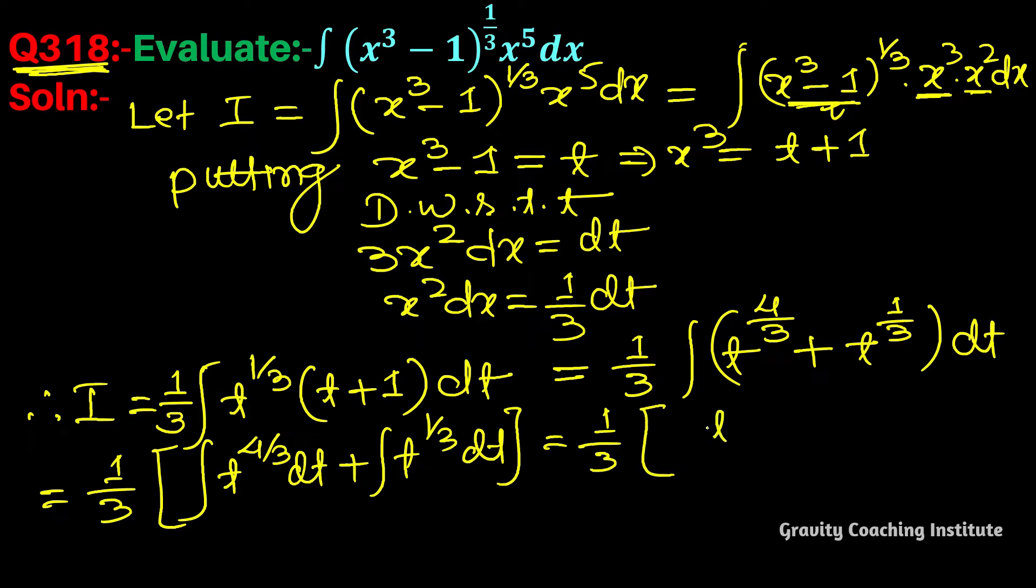This integration is t^(7/3) with coefficient 3/7, so the result is (1/3)[3t^(7/3)/7 + 3t^(4/3)/4] + c.